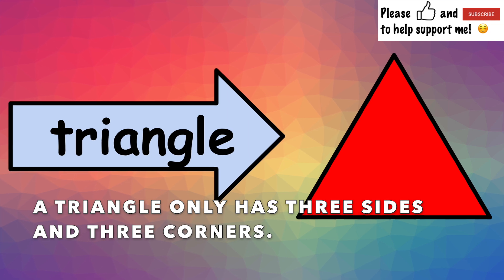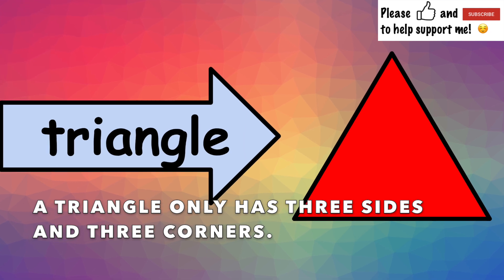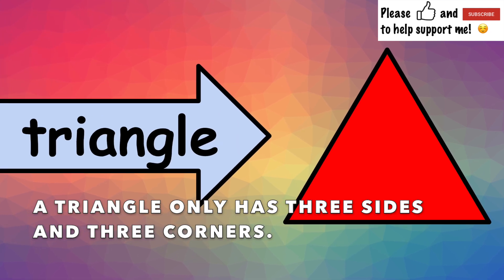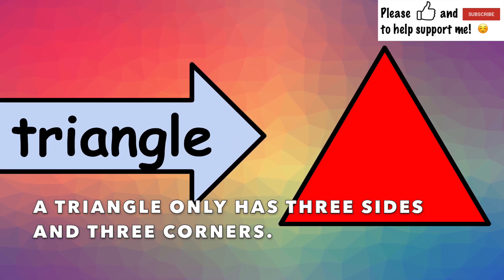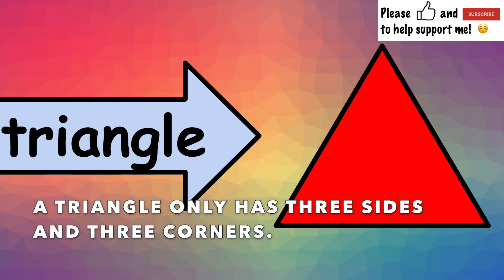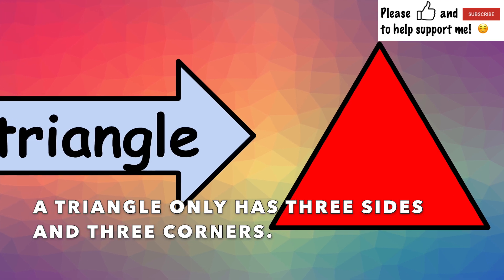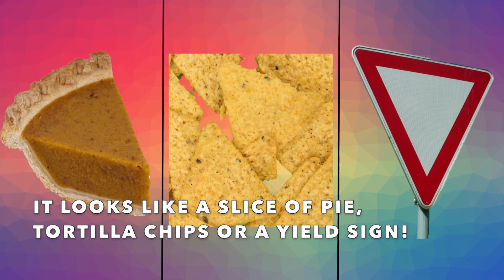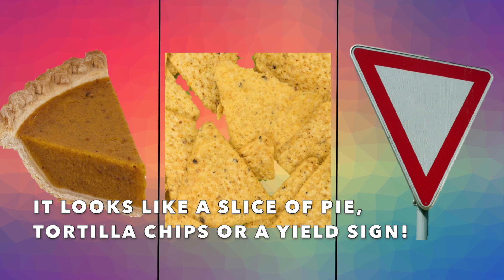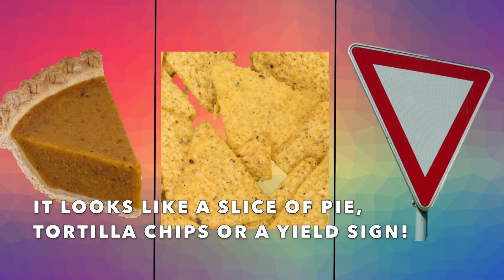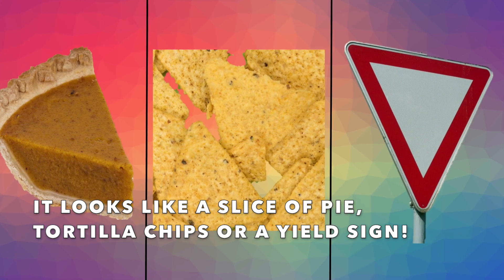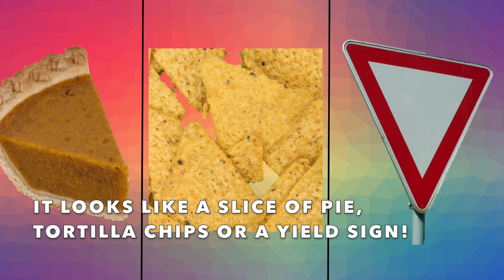A triangle only has 3 sides and 3 corners. It looks like a slice of pie, tortilla chips, or a yield sign.